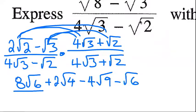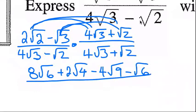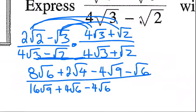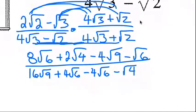All over: 4 root 3 times 4 root 3 is 16 square root 9. 4 root 3 times root 2 is plus 4 square root 6. Minus root 2 times 4 root 3 is minus 4 root 6. Minus root 2 times positive root 2 is minus square root 4.